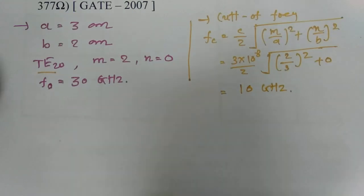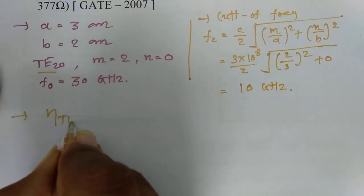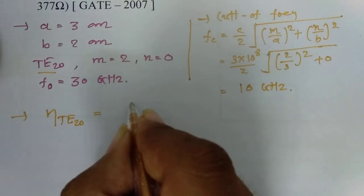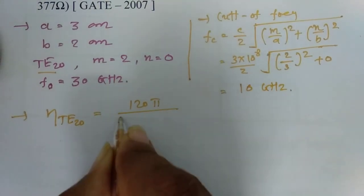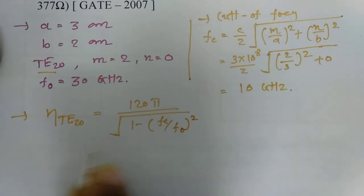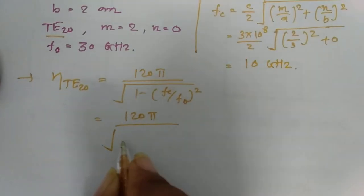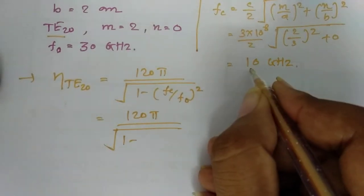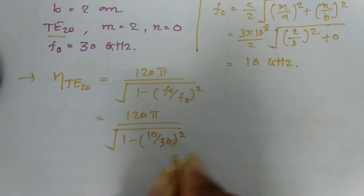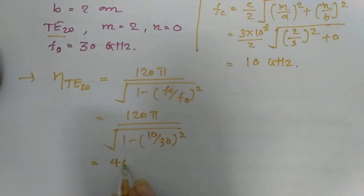Now let us calculate the wave impedance. The basic formula for wave impedance in TE20 mode is: Z_TE = 120π / √(1 − (Fc/F0)²). With Fc = 10 GHz and F0 = 30 GHz, we get 10/30 squared. Solving this gives a final answer of 400 Ω.